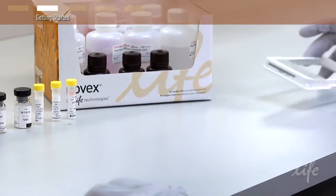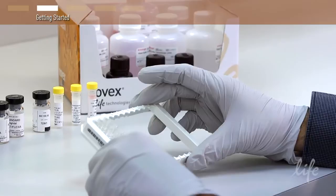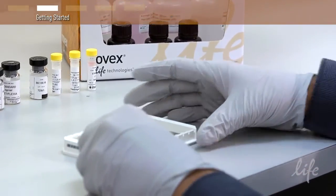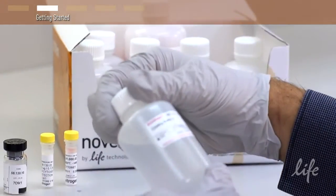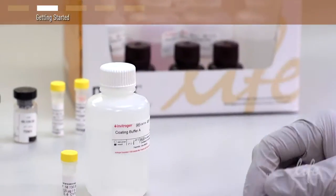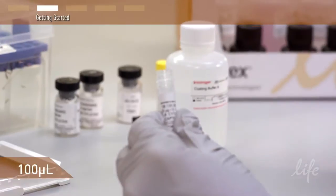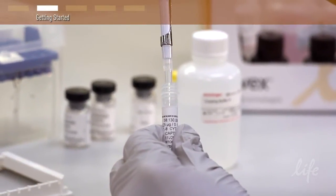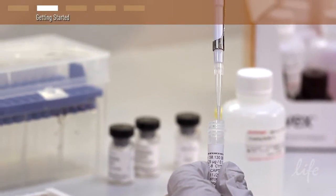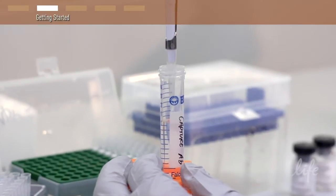The first step is to prepare the capture plates. Using the provided coating buffer, make a capture antibody solution by diluting the capture antibody in the coating buffer. Prepare enough to coat each well with 100 microliters. You may need to determine the optimal capture antibody concentration for plate coating. The suggested concentration is provided in the kit's technical data sheet.